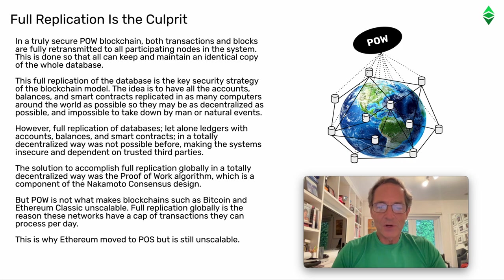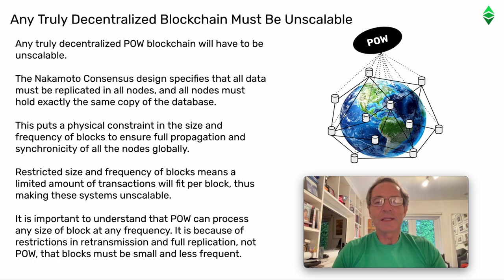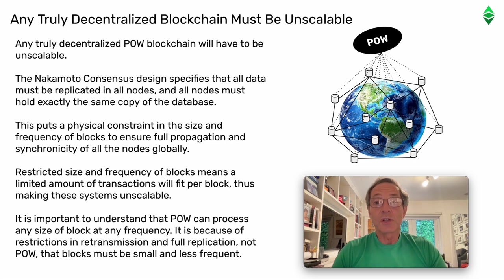But Proof-of-Work is not what makes blockchains such as Bitcoin and Ethereum Classic unscalable. Full replication globally is the reason these networks have a cap of transactions they can process per day. This is why Ethereum moved to Proof-of-Stake but is still unscalable. Any truly decentralized blockchain must be unscalable. Any truly decentralized Proof-of-Work blockchain will have to be unscalable. The Nakamoto consensus design specifies that all data must be replicated in all nodes and all nodes must hold exactly the same copy of the database. This puts a physical constraint in the size and frequency of blocks to ensure full propagation and synchronicity of all the nodes globally. Restricted size and frequency of blocks means a limited amount of transactions will fit per block, thus making these systems unscalable. It is important to understand that Proof-of-Work can process any size of block at any frequency. It is because of restrictions in retransmission and full replication, not Proof-of-Work, that blocks must be small and less frequent.